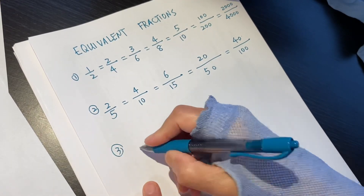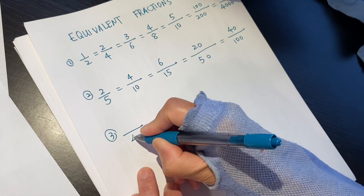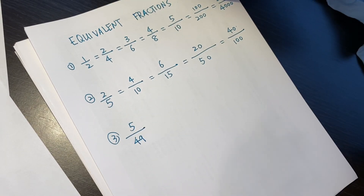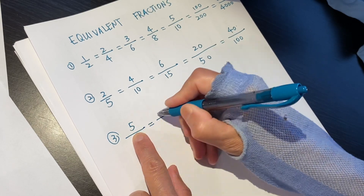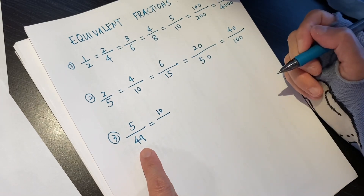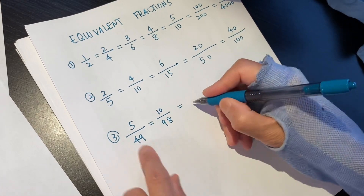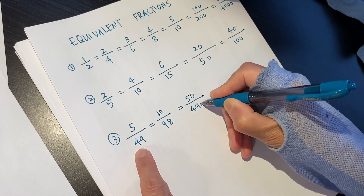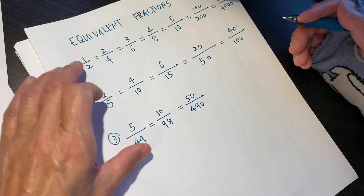The third one. Shall we make a difficult number? 5 over 49. We both times 2. On top, we times 2, the numerator becomes 10. On bottom, we times 2, the denominator becomes 98. Both times 10: 50 over 490. Both times 100. Both times 1,000. They are equivalent.